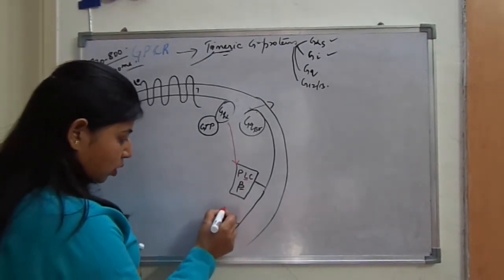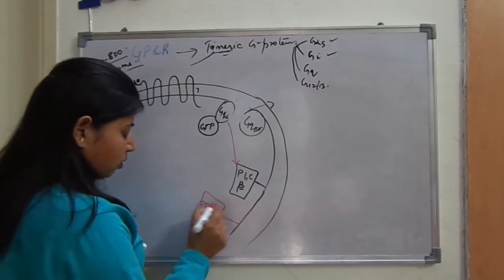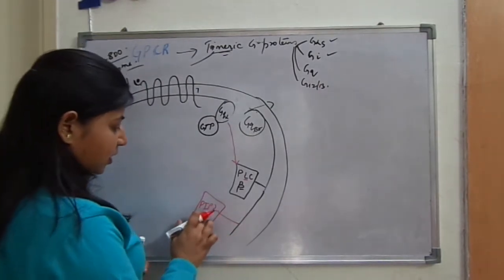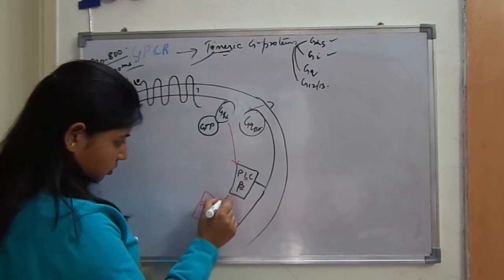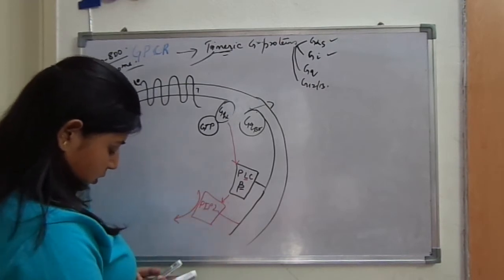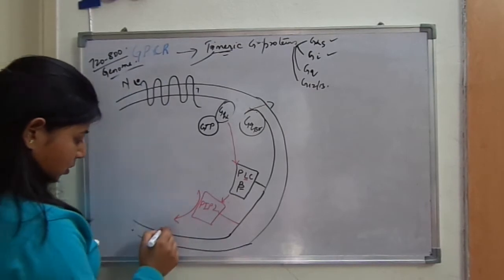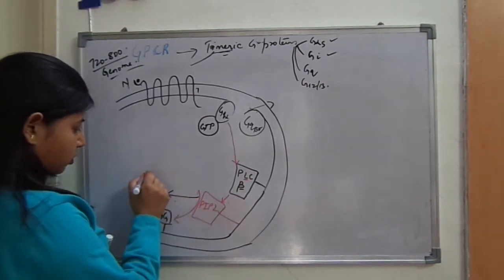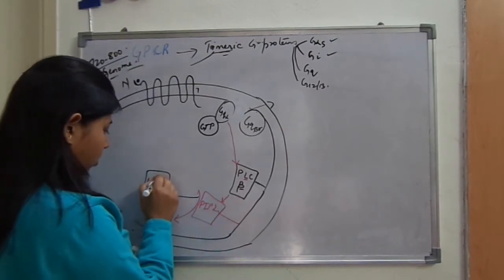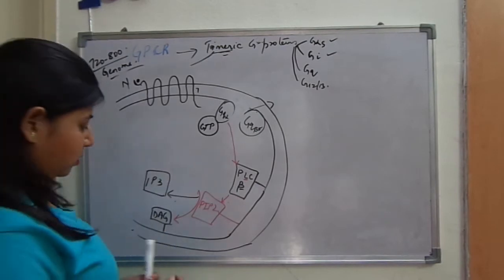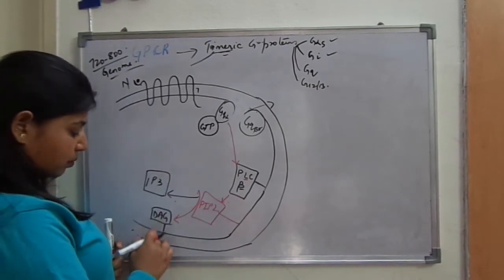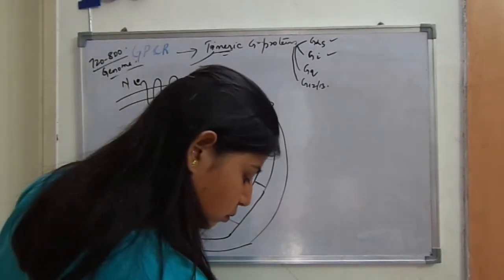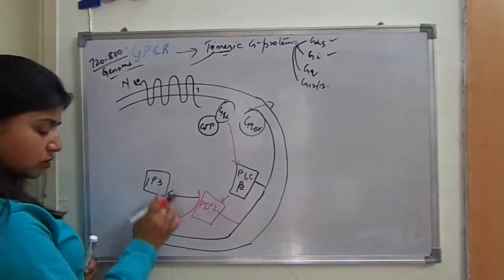Phospholipase C beta cleaves a molecule called PIP2 — phosphatidylinositol 4,5-bisphosphate. It cleaves this molecule into two molecules. One is DAG (diacylglycerol) and the second is IP3 (inositol 1,4,5-trisphosphate). These two are second messengers.